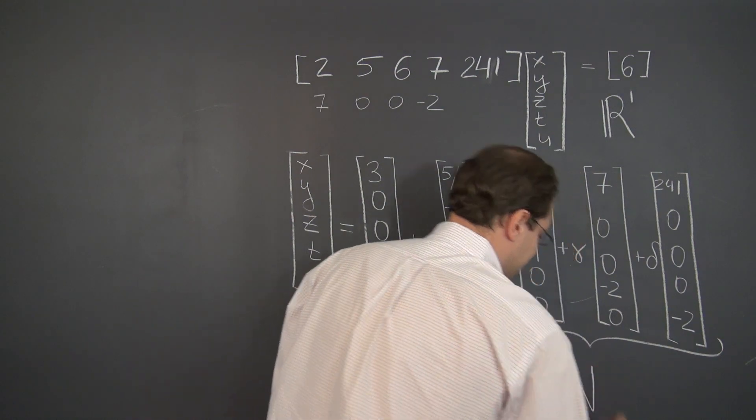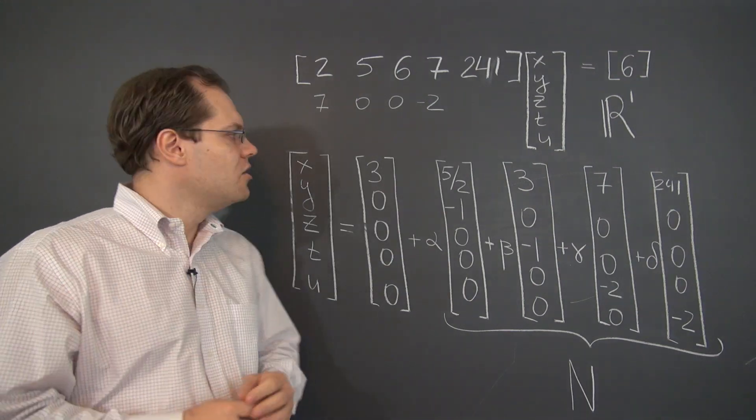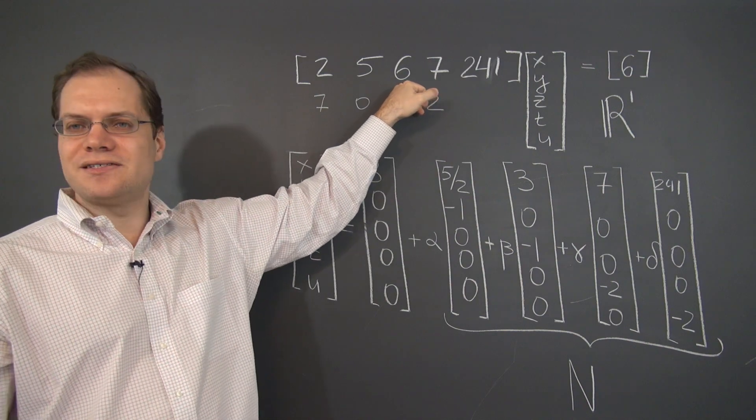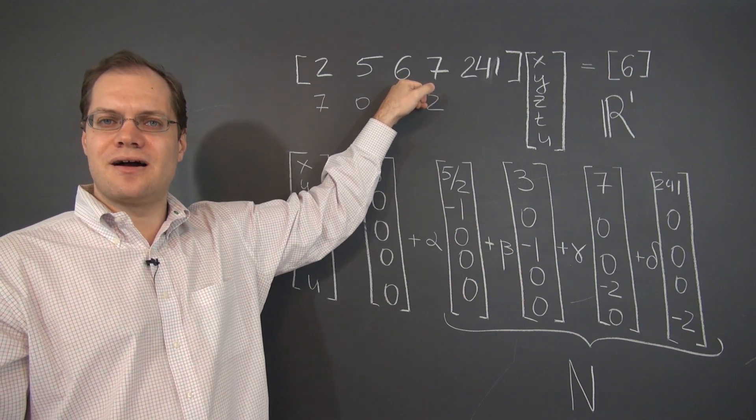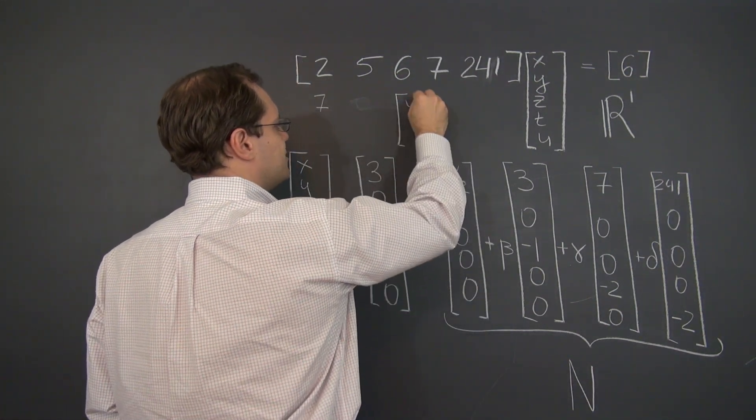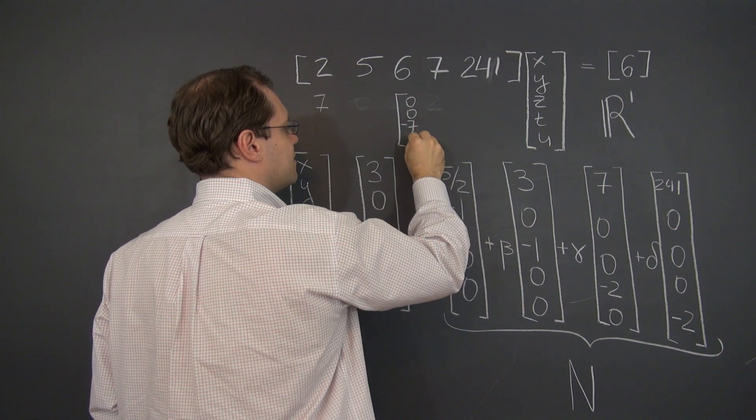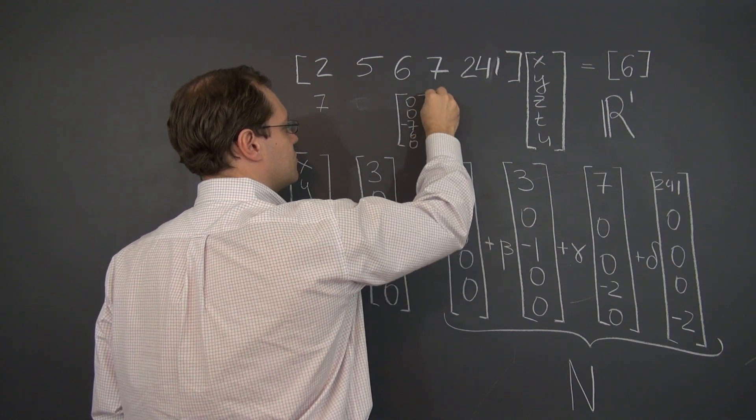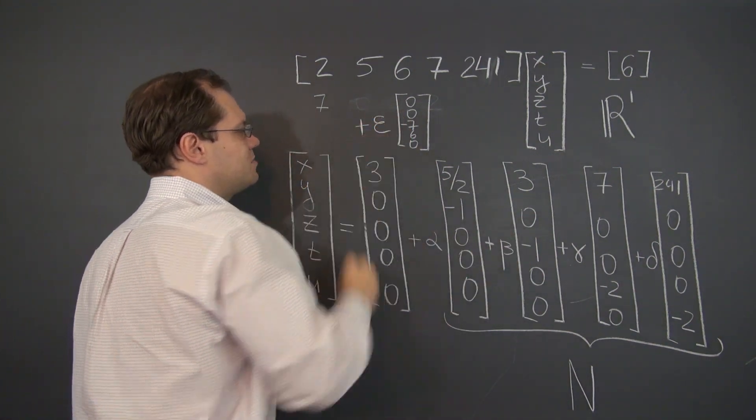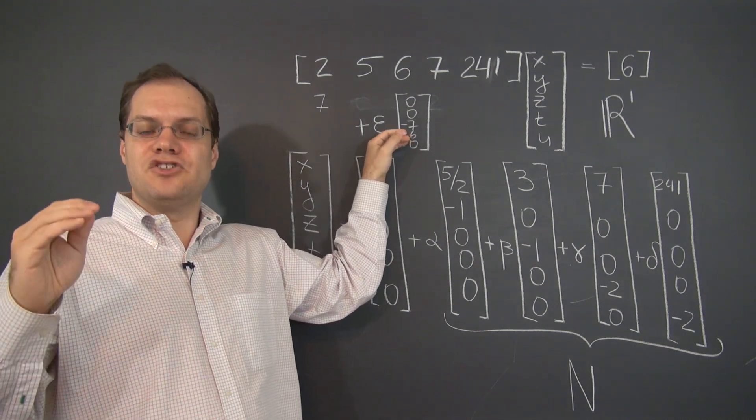And once again you might say, by the way, the problem is solved, but you might once again say, well, I'm also noticing that this column is seven-sixths times this column. So shouldn't we add zero, zero, minus seven, six, zero. Gamma delta, what's another letter, epsilon. So shouldn't this be part of the null space? And the short answer is no.